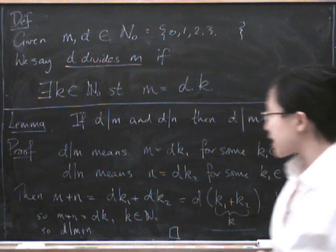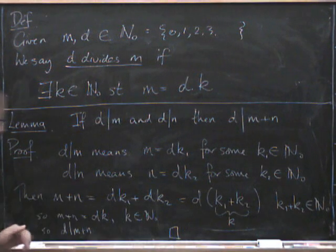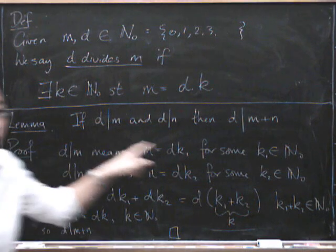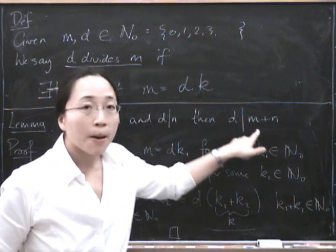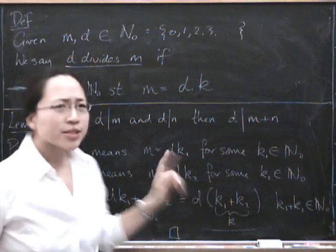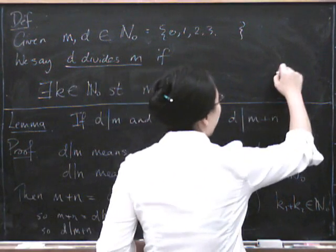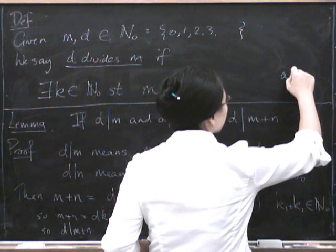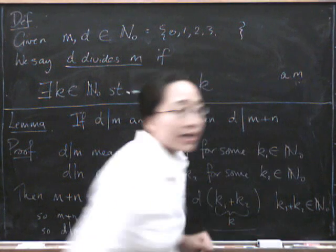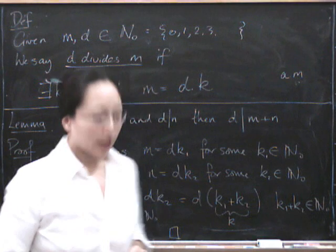So I hope you can see, perhaps I'll go over here again. I hope you can see that this proof would also work if we were doing M minus N instead. And perhaps you can see if you can do it for A times M, where A is some other natural number.